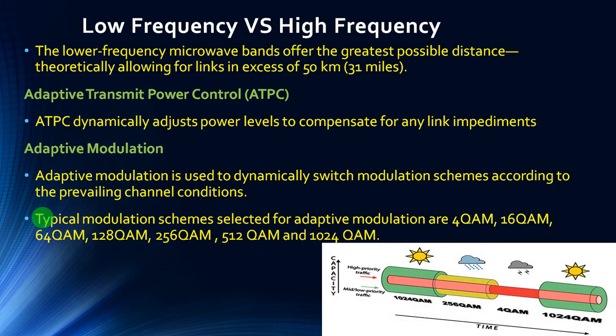Low frequency versus high frequency: the low frequency microwave bands offer the greatest possible distance, theoretically allowing links in excess of 50 km. In telecommunications, frequency and distance are inversely proportional to each other — when you have low frequency, it provides a larger distance; when you have higher frequency, it provides a lesser distance.